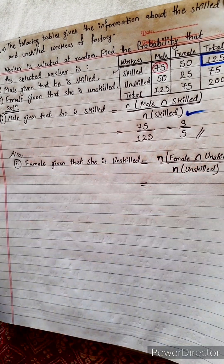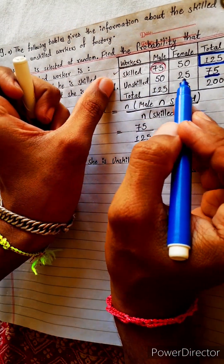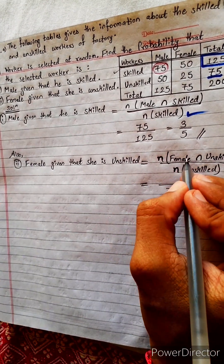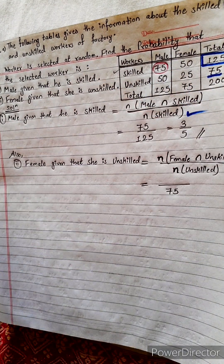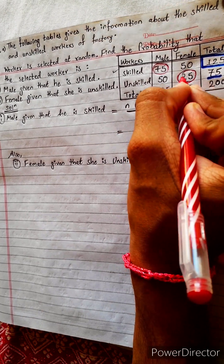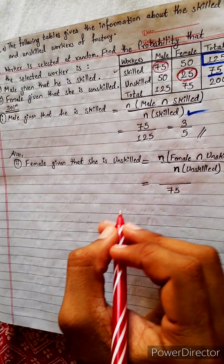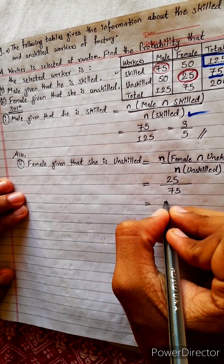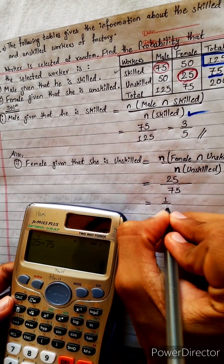Number of unskilled — either male or female, both — is 75. So write 75 here. Female intersection unskilled means they should be female also and unskilled also. Because at least they are skillful in household cooking activities, only 25 females are unskilled. They use only TikTok. So 25 by 75, which is 1 by 3. The answer is 1/3.